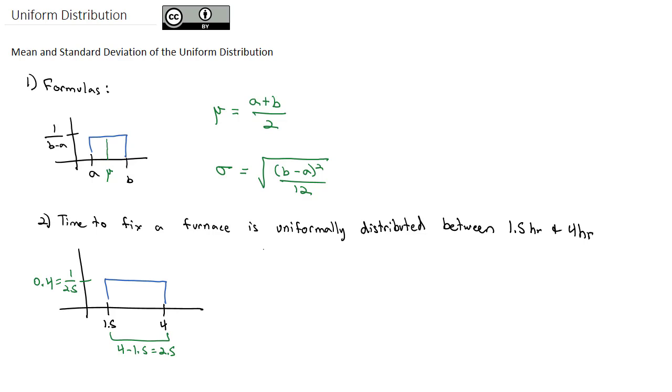If we wanted to find the mean of this distribution, we would simply take those endpoints of 1.5 and 4, add them together and divide by 2. When we do that, we get 2.75 hours. So on average, these furnaces are being fixed in 2.75 hours.